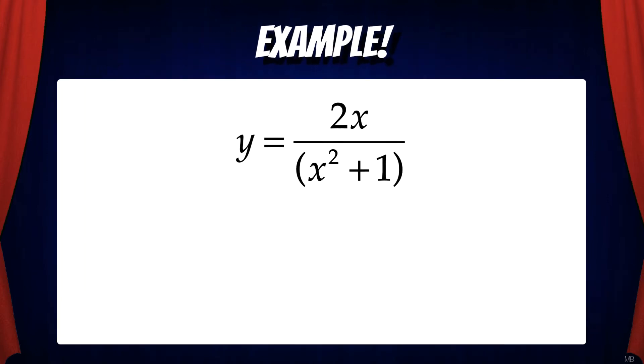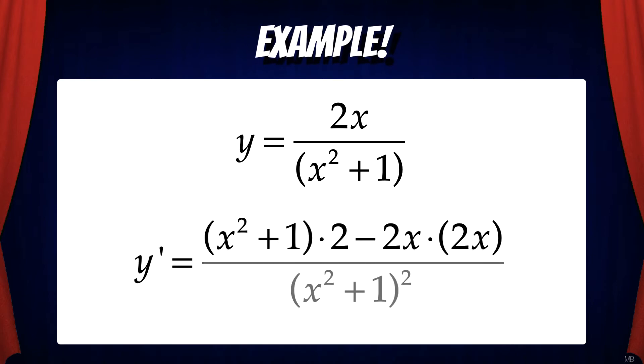Let's do an example. Suppose y equals 2x over x squared plus 1 and we want the derivative. All we need to do is follow the pattern. We're going to take the low function times the derivative of the high function, minus the high function times the derivative of the low function, all over the square of the low function.